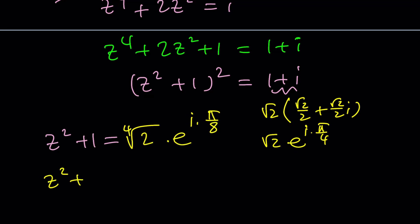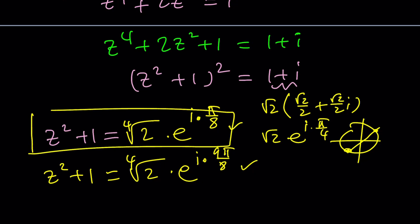To find the other square root, use the same modulus and increment the argument by pi, because notice that squares will be pi radians apart. And that will be 9 pi over 8. Let's just focus on this for now, and the other is very similar.